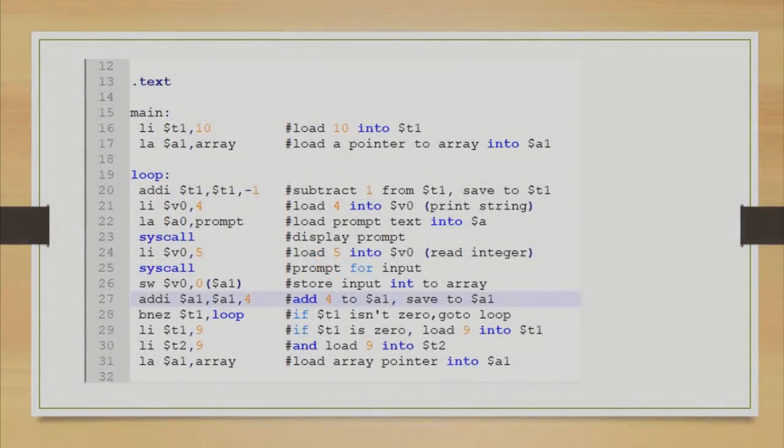We move to dot text section. This is where we do all the logic and calculation. In main function, we load constant value 10 into register T1 and load a pointer to array into register A1.